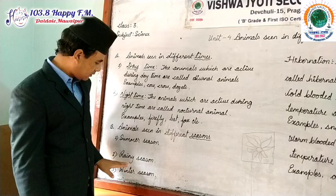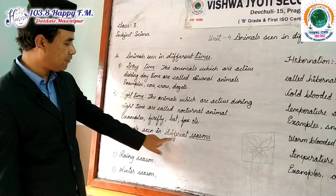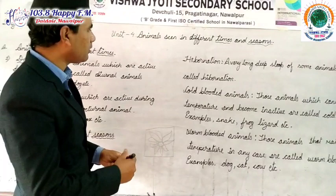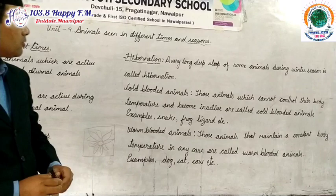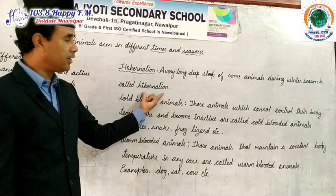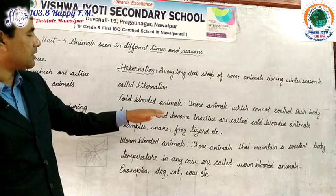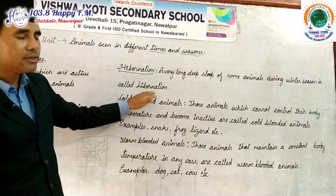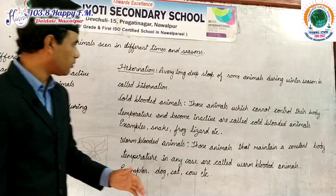Now let us look at a very important definition: hibernation. A very long deep sleep of some animals during winter season is called hibernation. These animals sleep for three, four, or five months during winter.